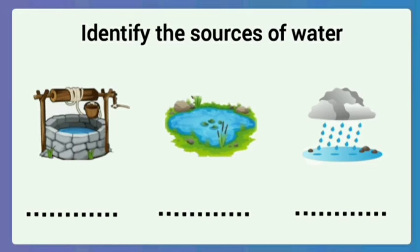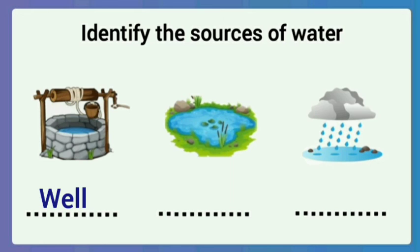Second one: identify the sources of water and write the name in the given place. The first one is a well — spelled W-E-L-L. The next one is a pond — spelled P-O-N-D. The last one is rain — spelled R-A-I-N.